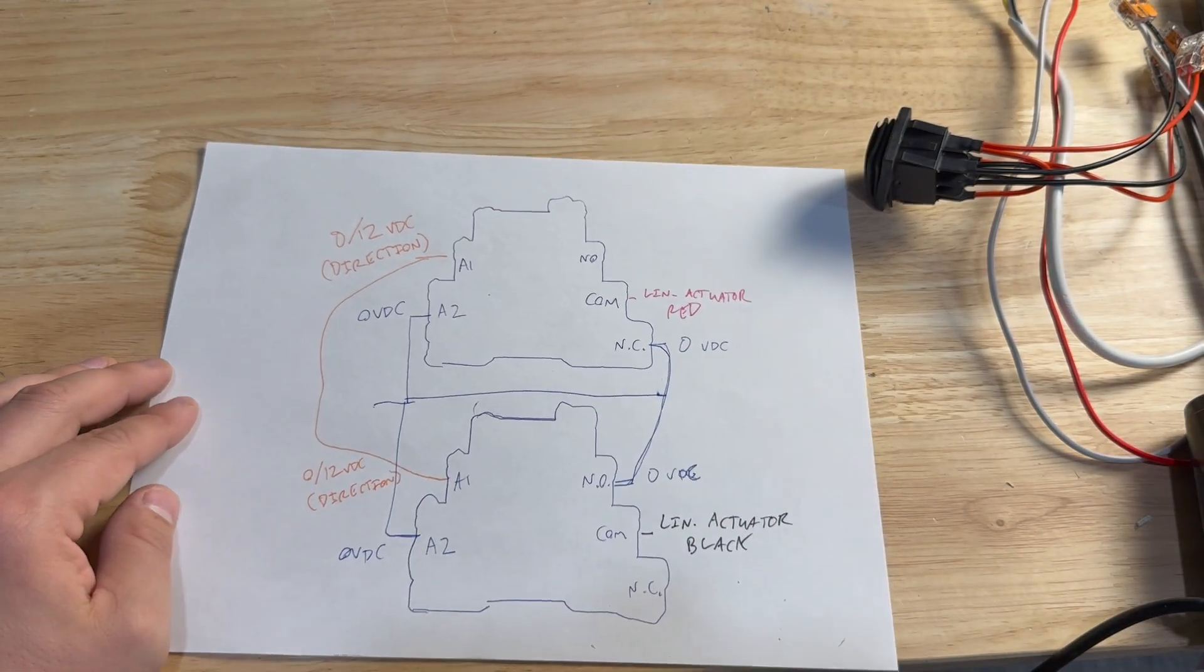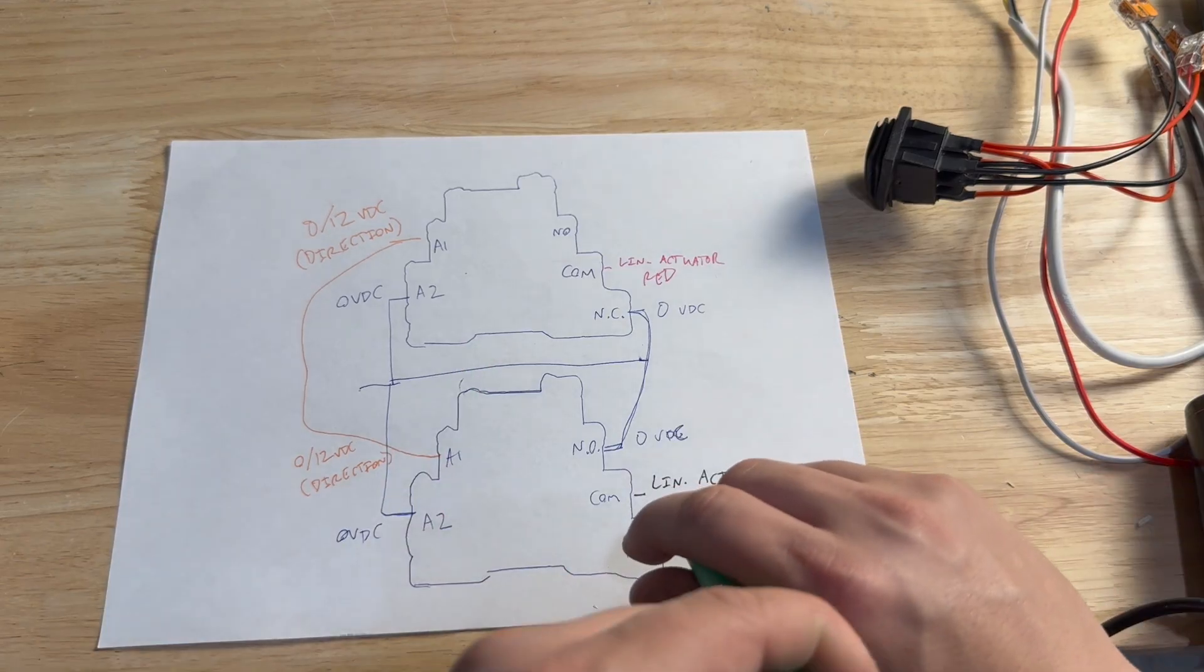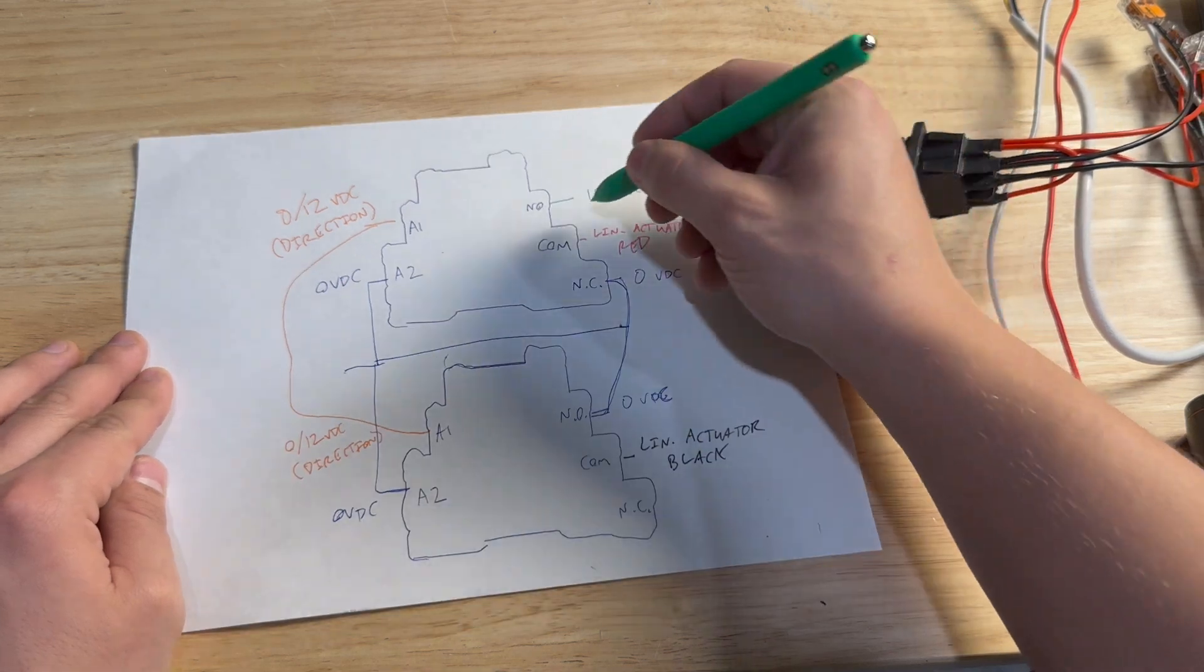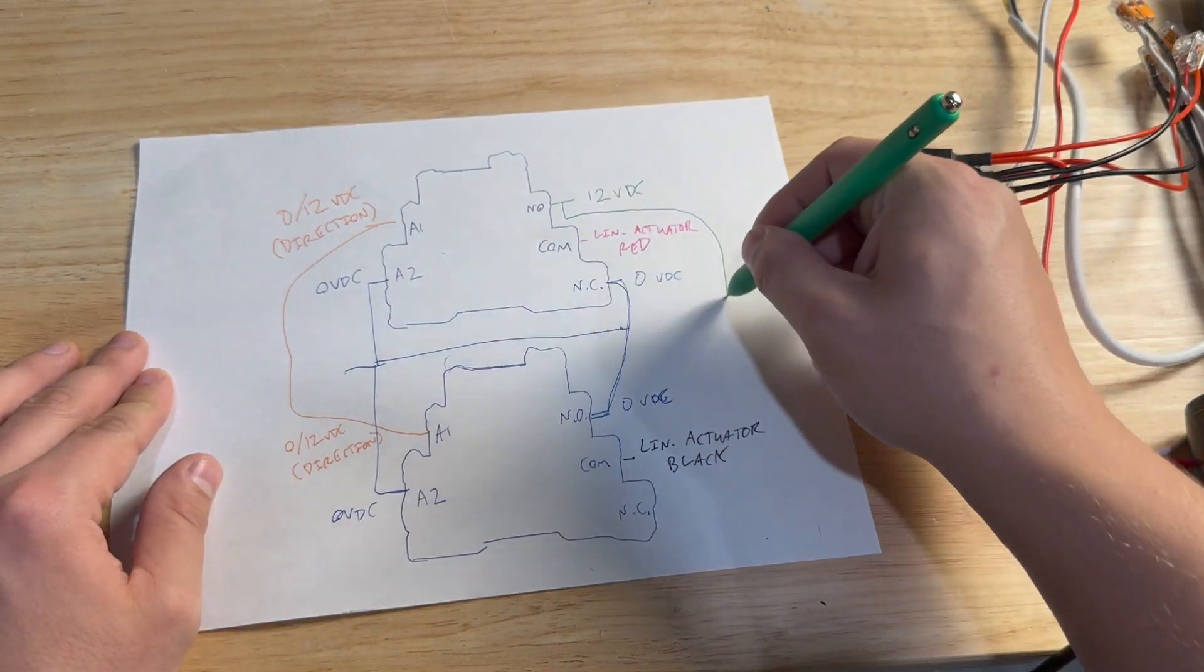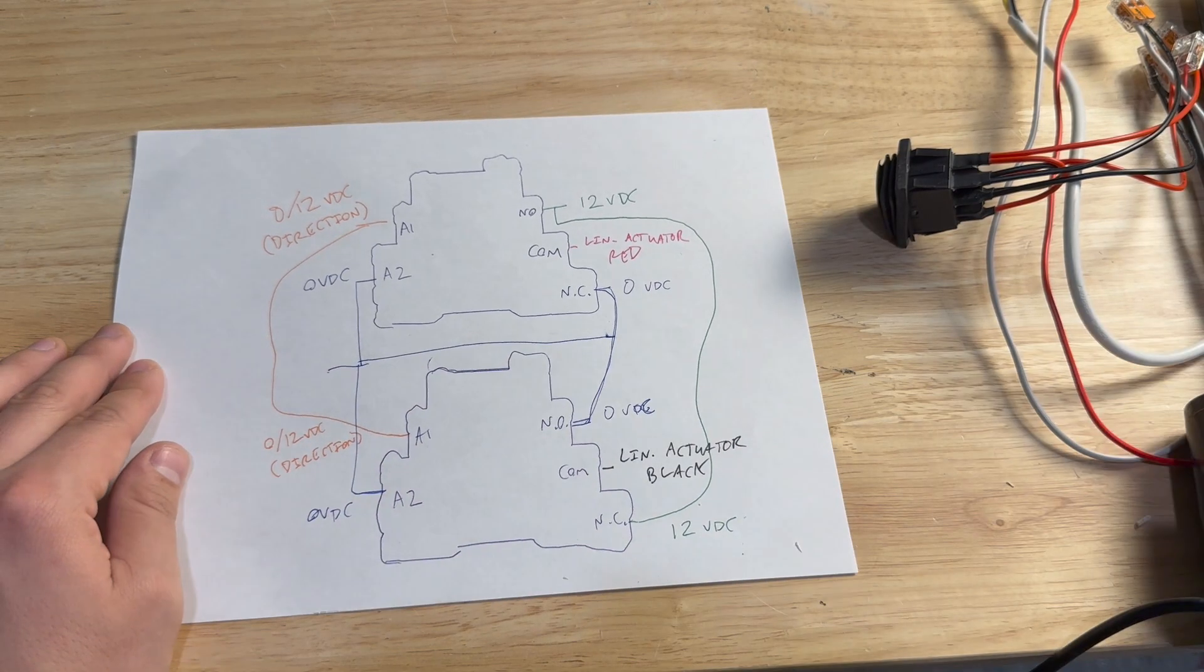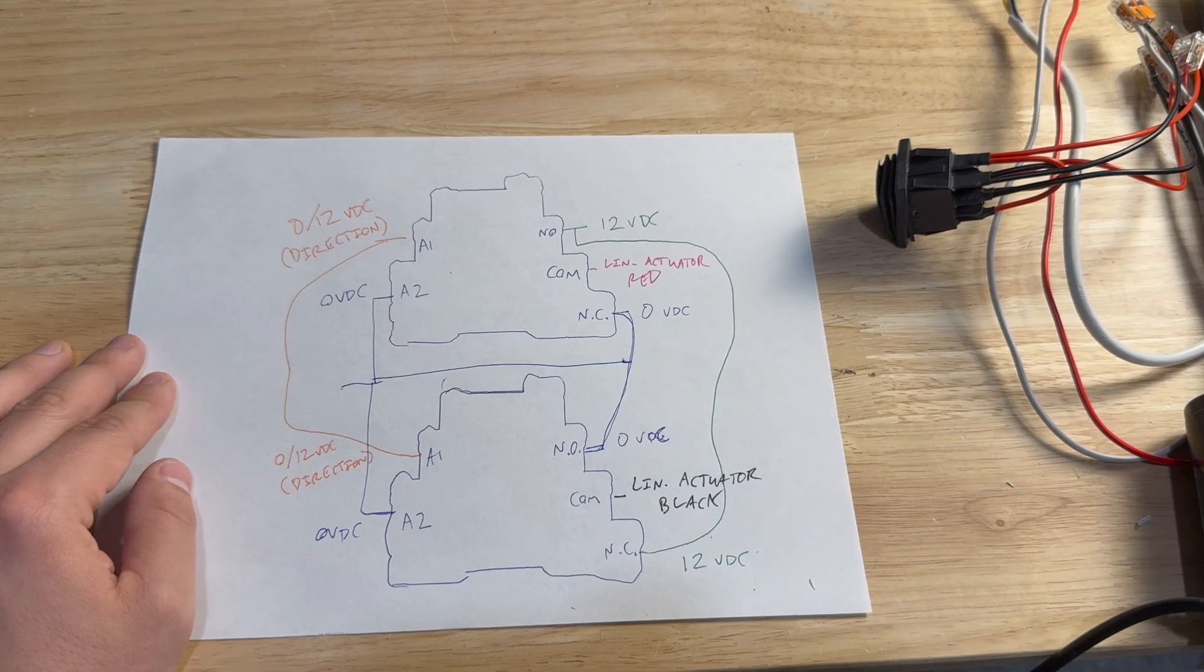But since I need to achieve directional switching, I need positive power on normally closed for one relay, and I'll jumper that to normally open on the other relay. Then I land 0 volts DC on the other normally open or normally closed terminal and jumper those together too. So now as long as I energize these relays at the same time, the actuator will switch directions with the state of the relay. This means I can use the signal from my PLC or microcontroller of either a one or a zero, to mean forwards or reverse, and jumper it to both relays so that it switches at the same time.